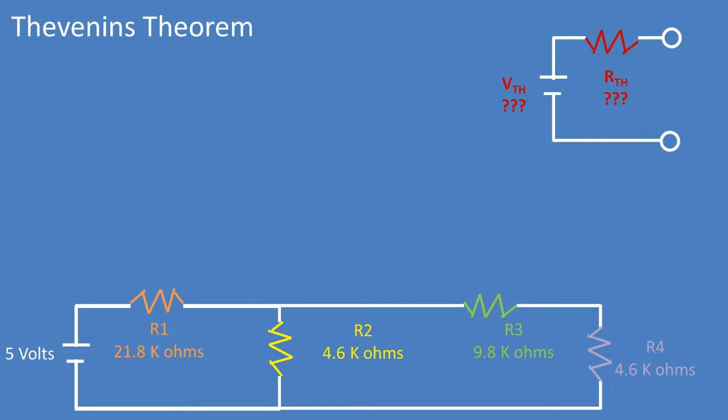We have a series parallel circuit as depicted at the bottom of the screen. We want to simplify that into a Thevenin equivalent circuit, depicted at the top right of the screen. We want to find the resistance of the Thevenin equivalent circuit and the voltage of the Thevenin equivalent circuit with respect to resistor 4. Let's start by finding the resistance of the Thevenin equivalent circuit.